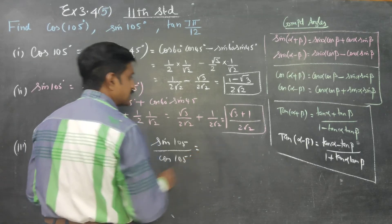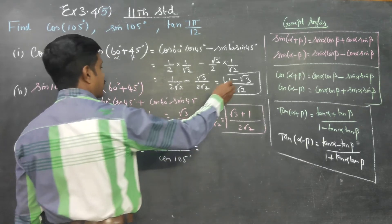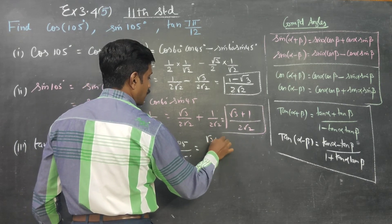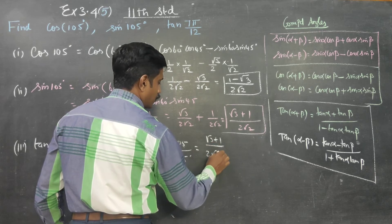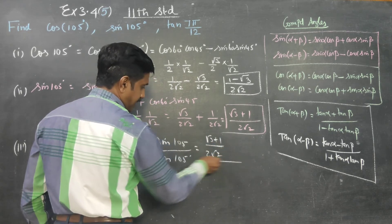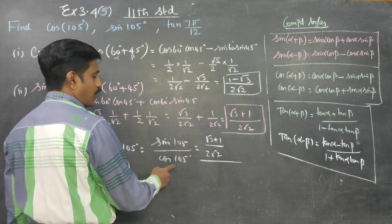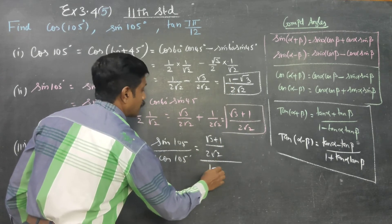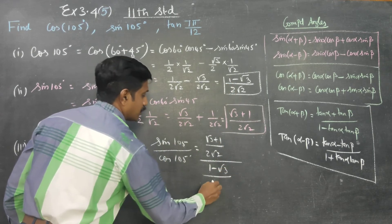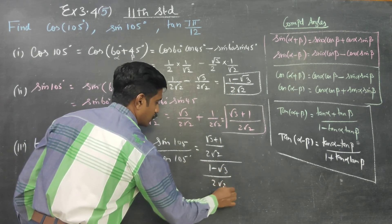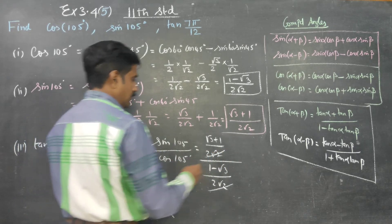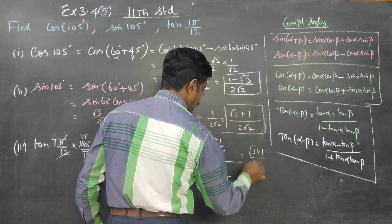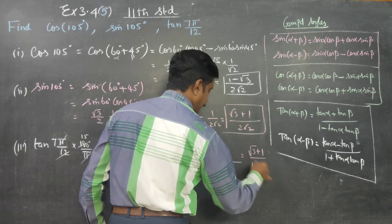Since we already have sin 105 and cos 105, we divide them directly. Sin 105 is (√3 + 1)/(2√2) divided by cos 105 which is (1 − √3)/(2√2). The 2√2 cancels out, leaving (√3 + 1)/(1 − √3).